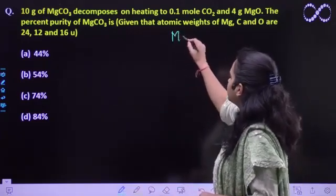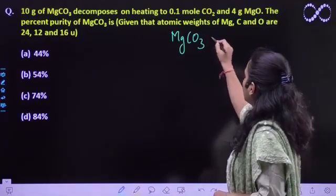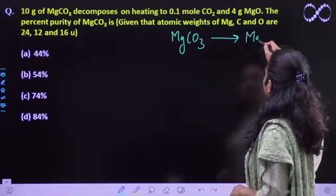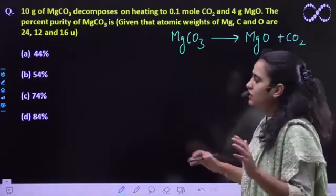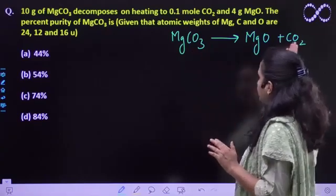If we see the reaction, MgCO3 decomposition, this will be MgO plus CO2. As we can see the molar ratio is 1 is to 1 is to 1.